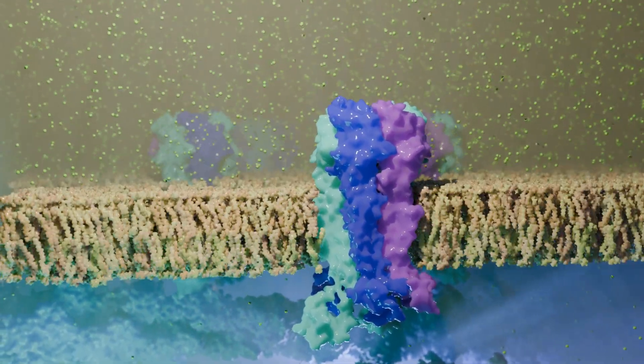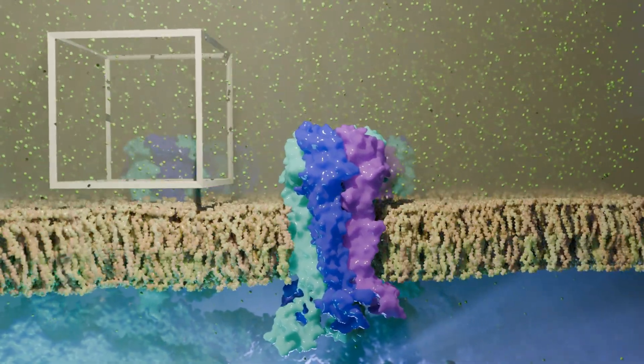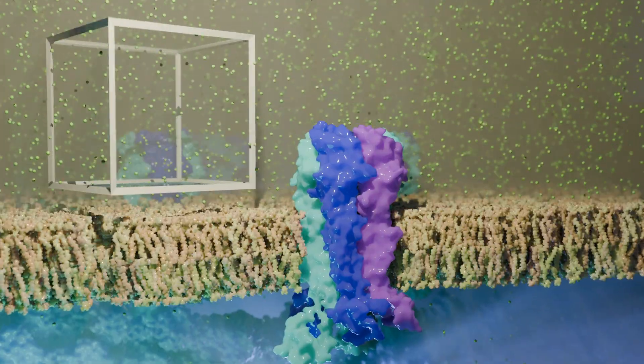The number of green ions floating around here is about accurate. The cube marks an area of 10 by 10 by 10 nanometers.